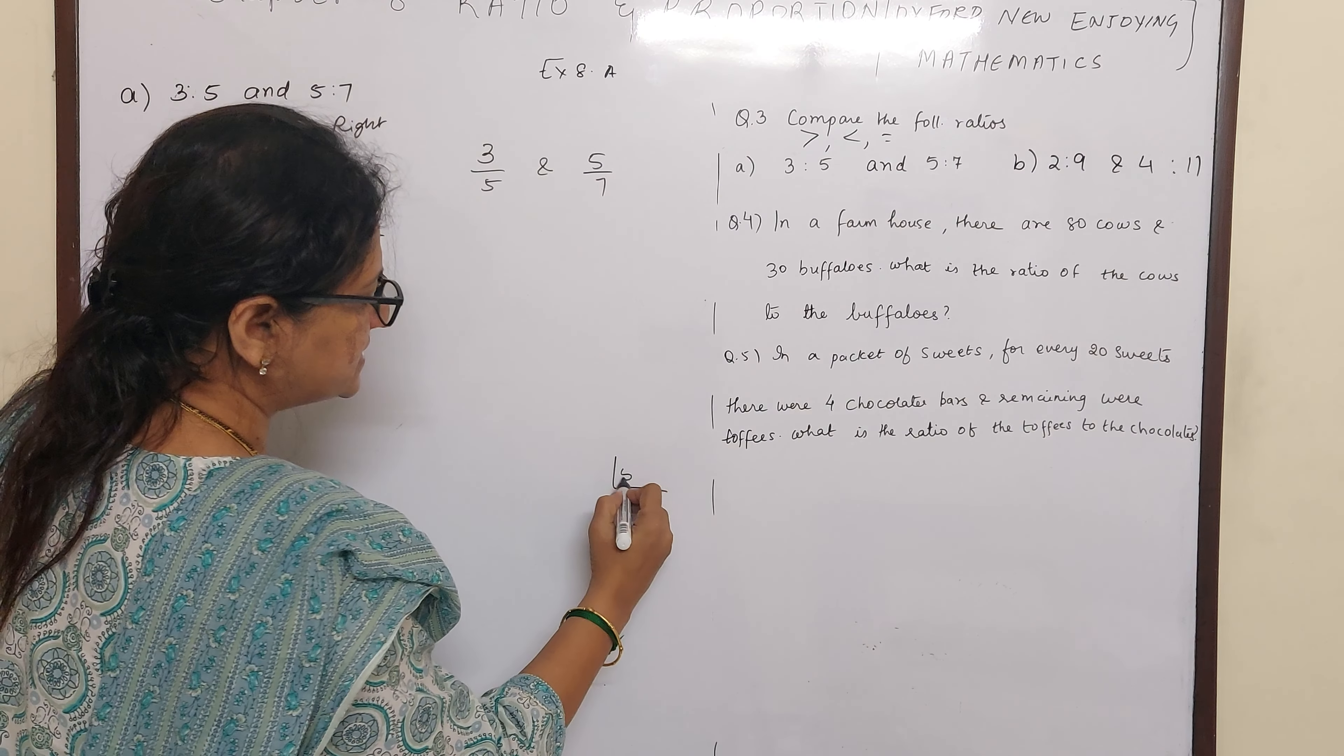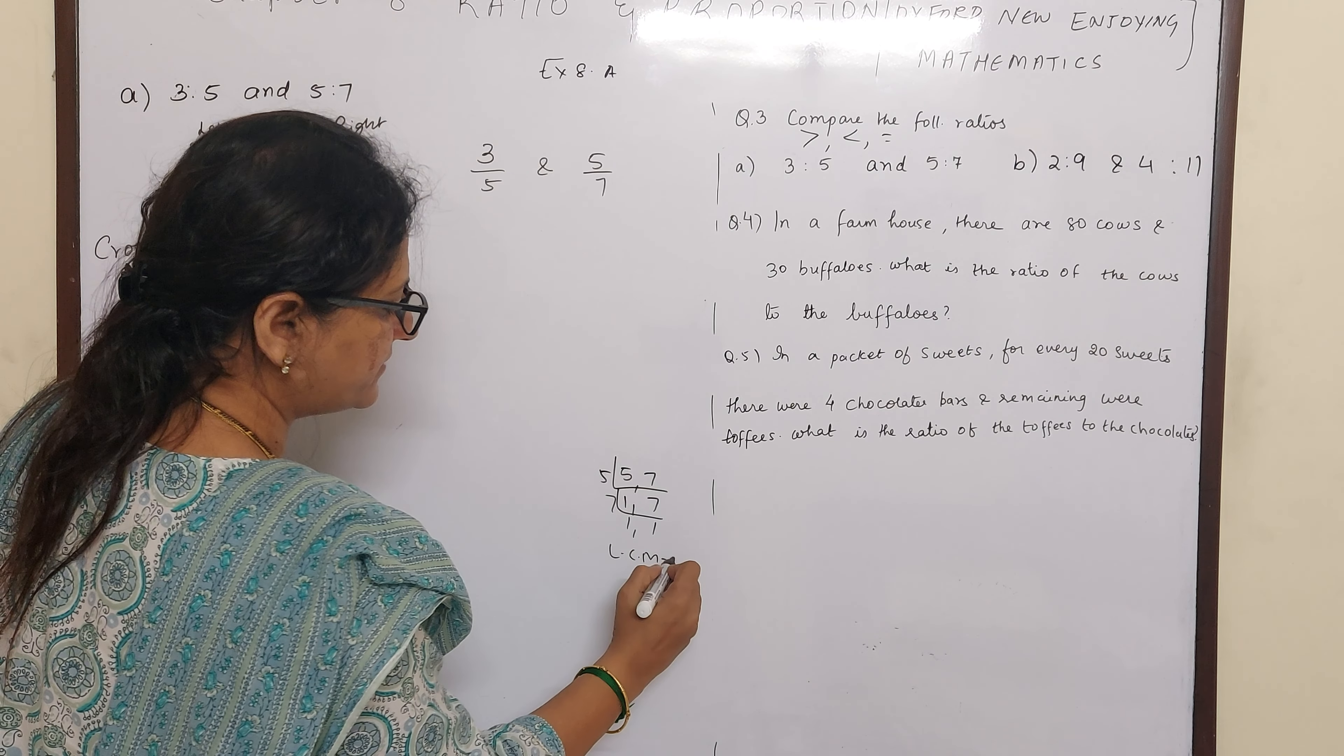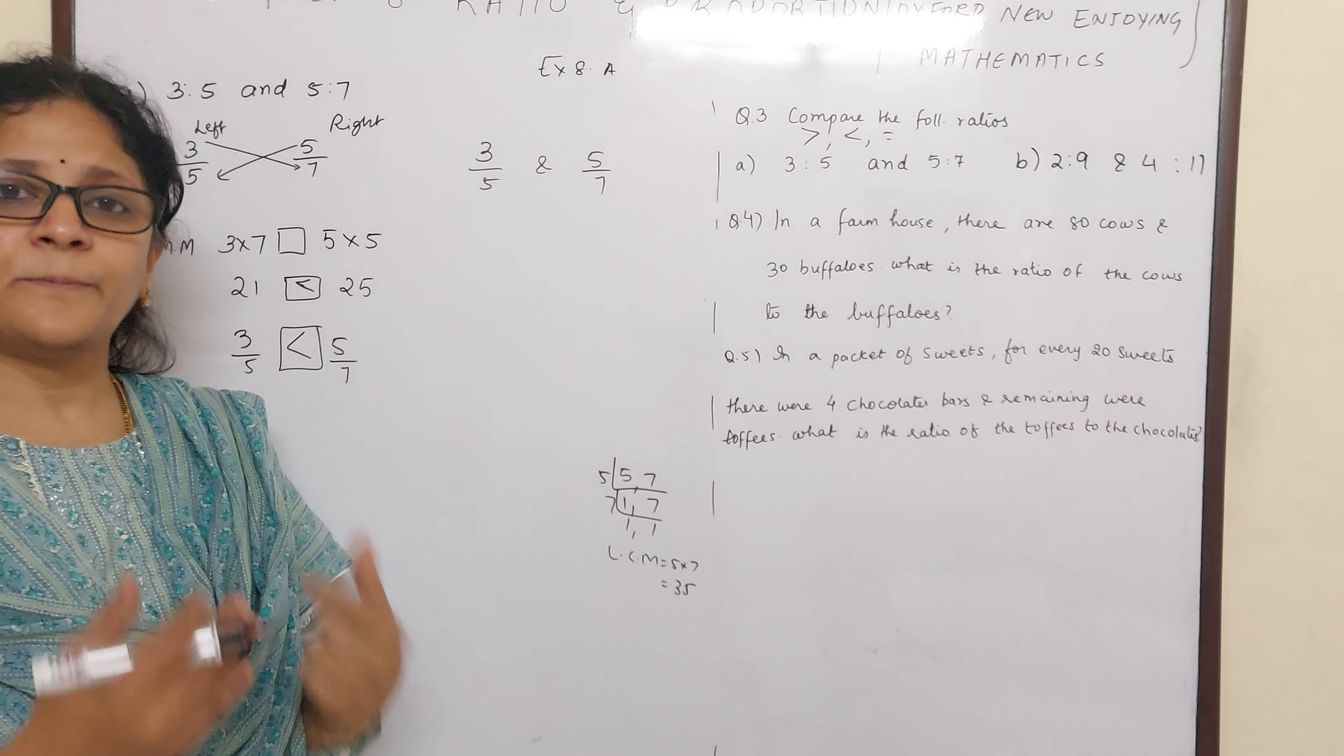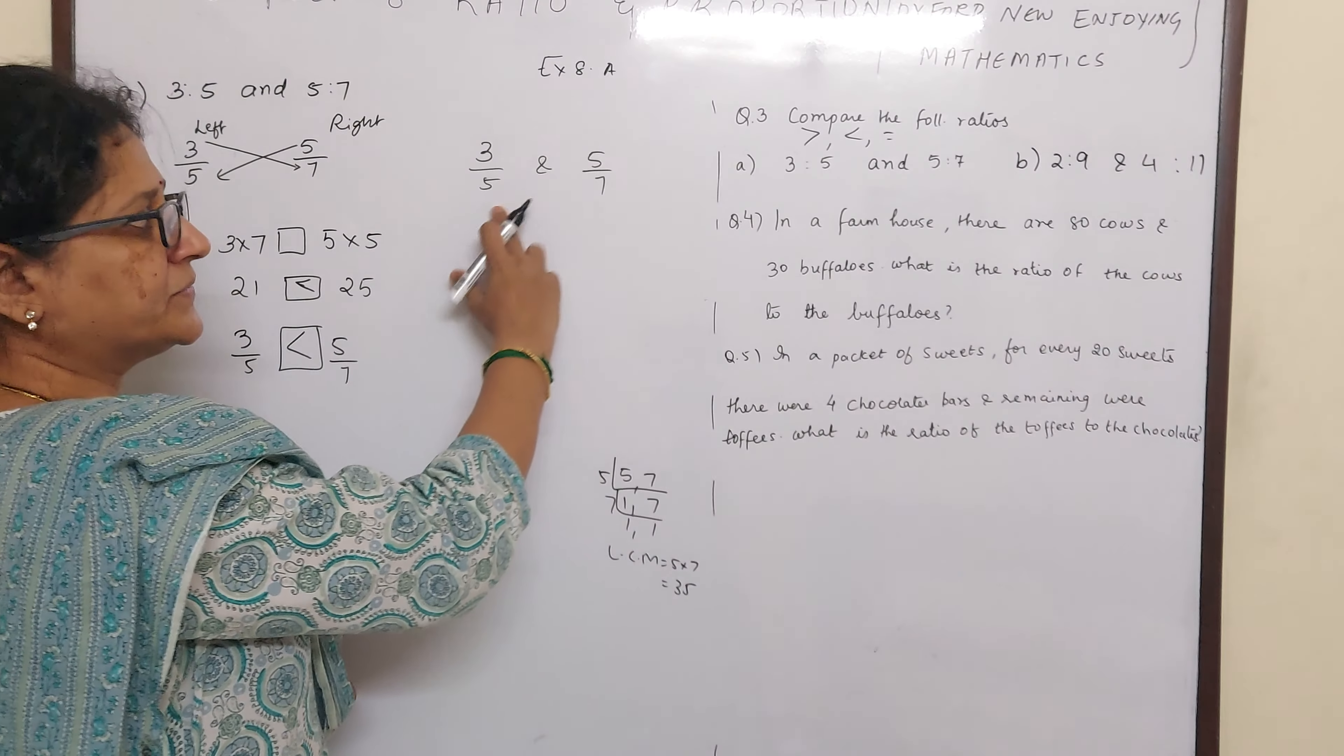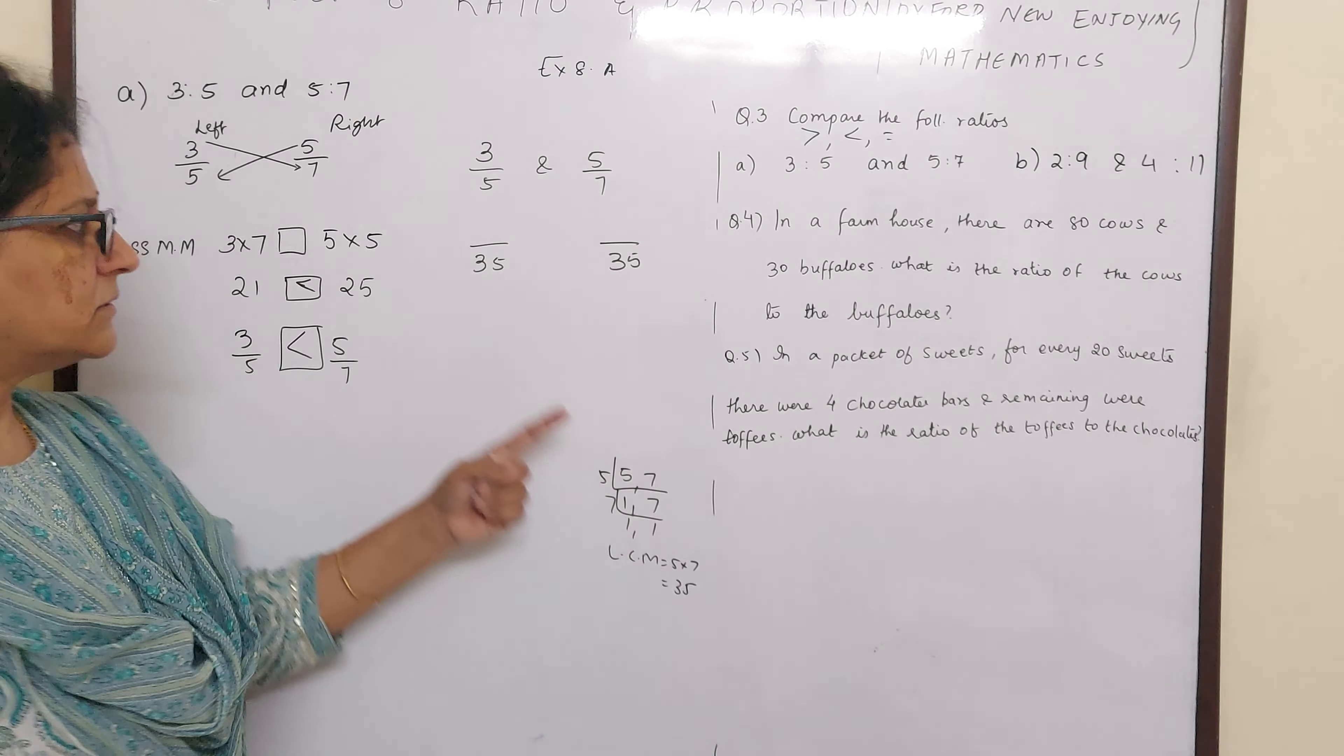So to convert into like fractions we have to take out LCM. So 5 and 7 LCM is 5 and 5, 7 and 7, LCM is 5 into 7 which is 35. Always remember children, one more trick. If the denominators are prime numbers, then their product only will be your LCM. Like 5 is a prime number, 7 is a prime number, so the LCM will be their product. So you can escape this.